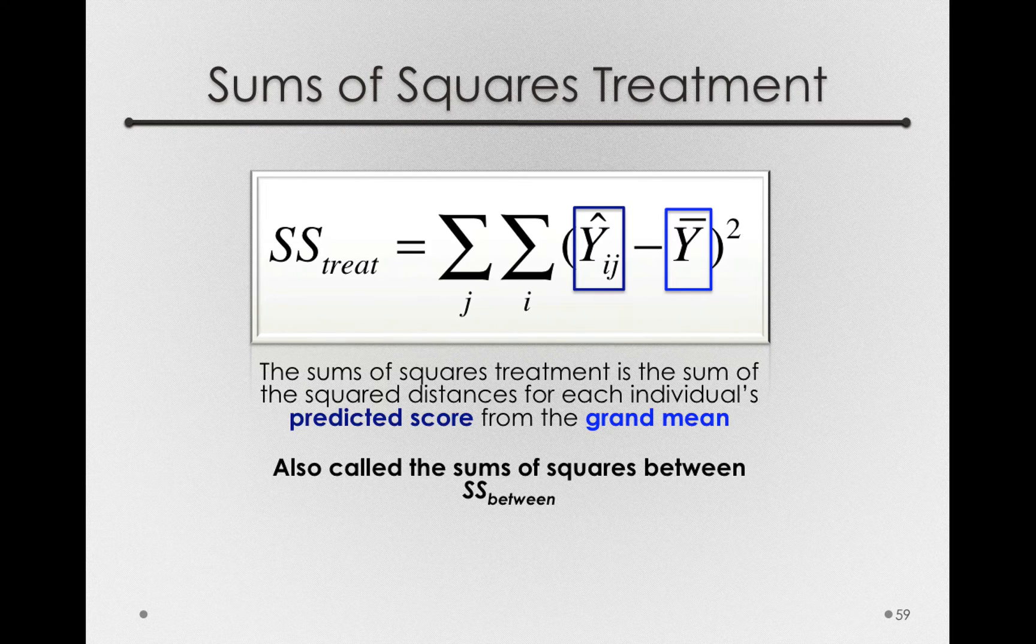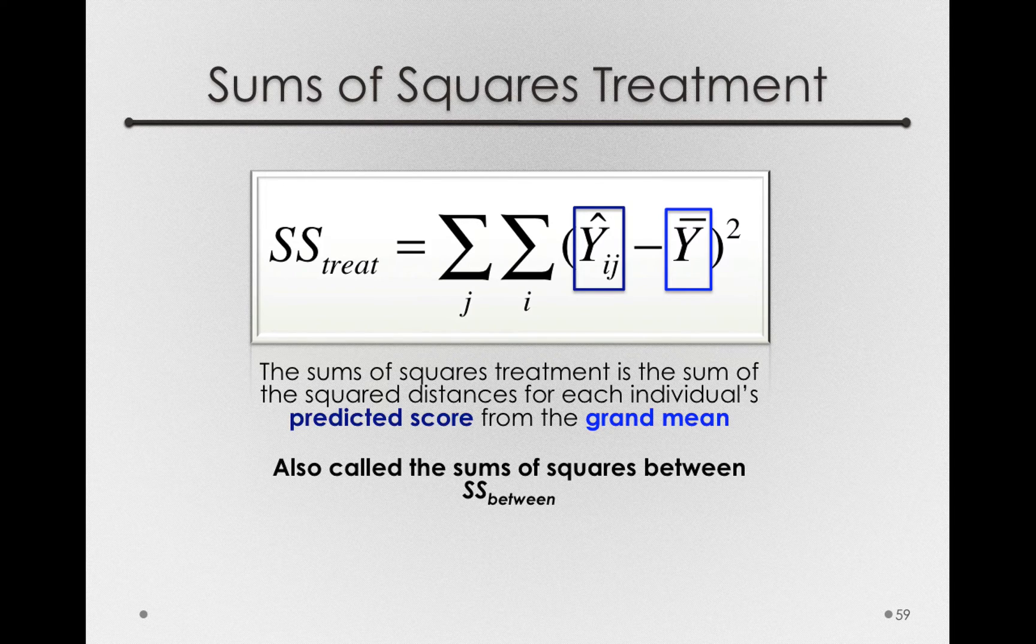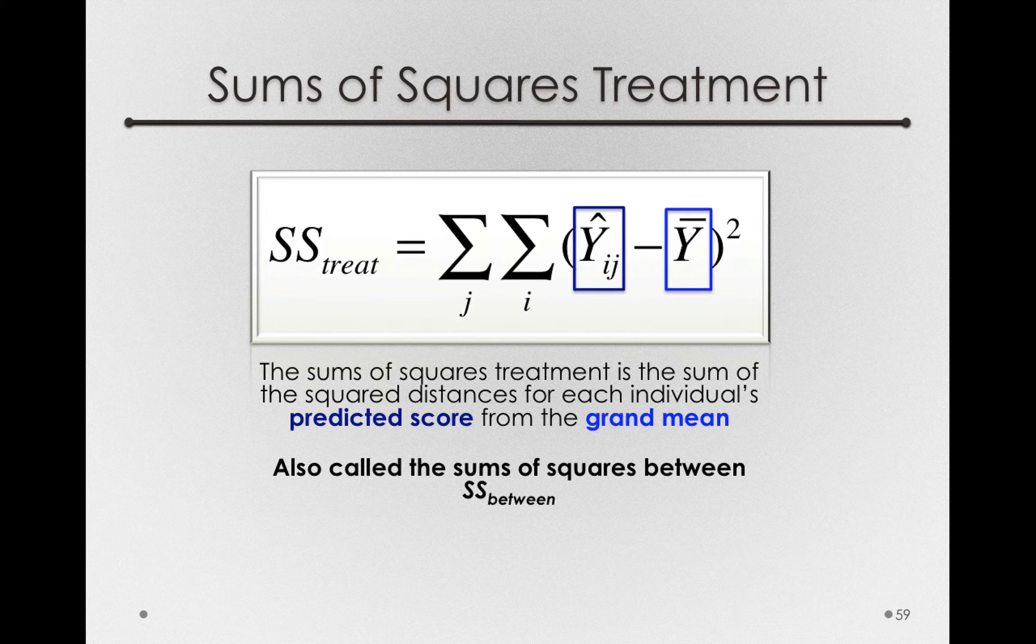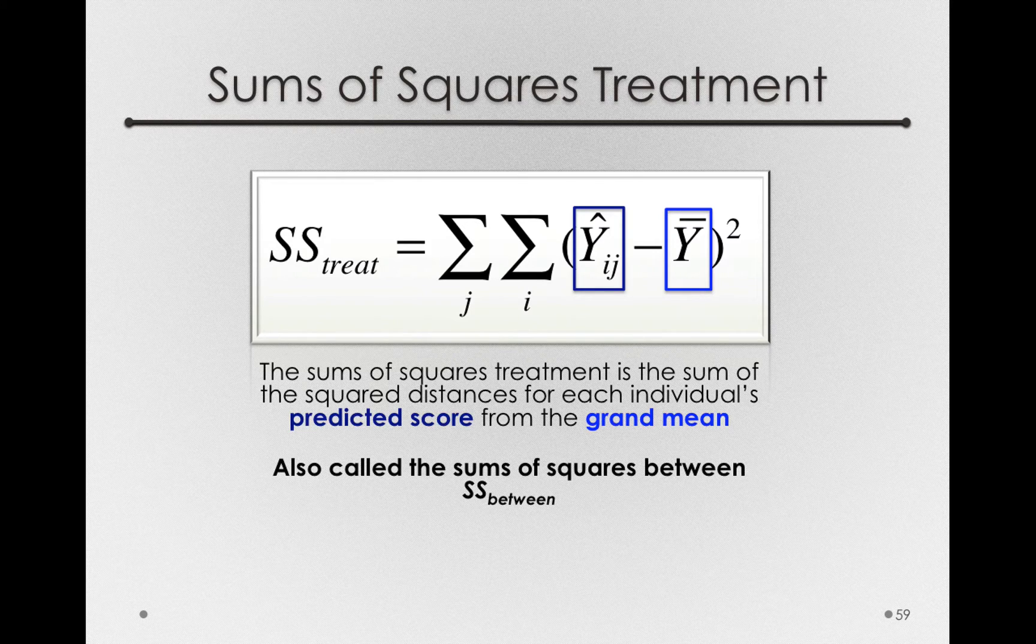You may have noticed though that the predicted score for any individual is simply their group's mean, which will be the same group mean for every individual in the same group.